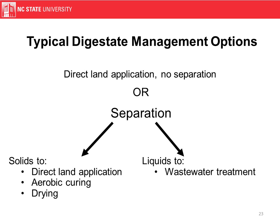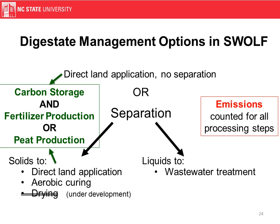The liquids meanwhile would go to wastewater treatment. In SWOLF, when you're land-applying or curing and then land-applying, you get a carbon storage benefit and choose between a fertilizer or peat production offset. Emissions are counted for all steps — land application, separation, wastewater treatment — all these steps have emissions associated with them and they're all calculated in this process model.